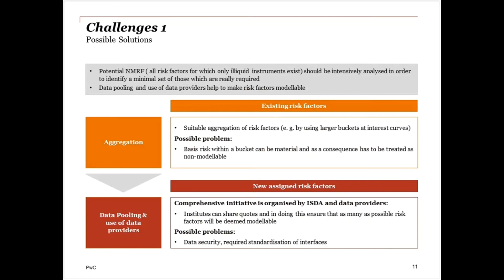Alternatively, institutions can enhance their source of market data via data pooling solutions or additional data provider sources. That's a very good point. For large banks, it is often surprising to many people that market data is scattered across the bank — sometimes there is no single golden source where all of this comes together. What banks are actually doing is creating golden sources, combining all scattered market data so they have a better chance of moving risk factors from non-modelable to modelable using data they already have in-house.